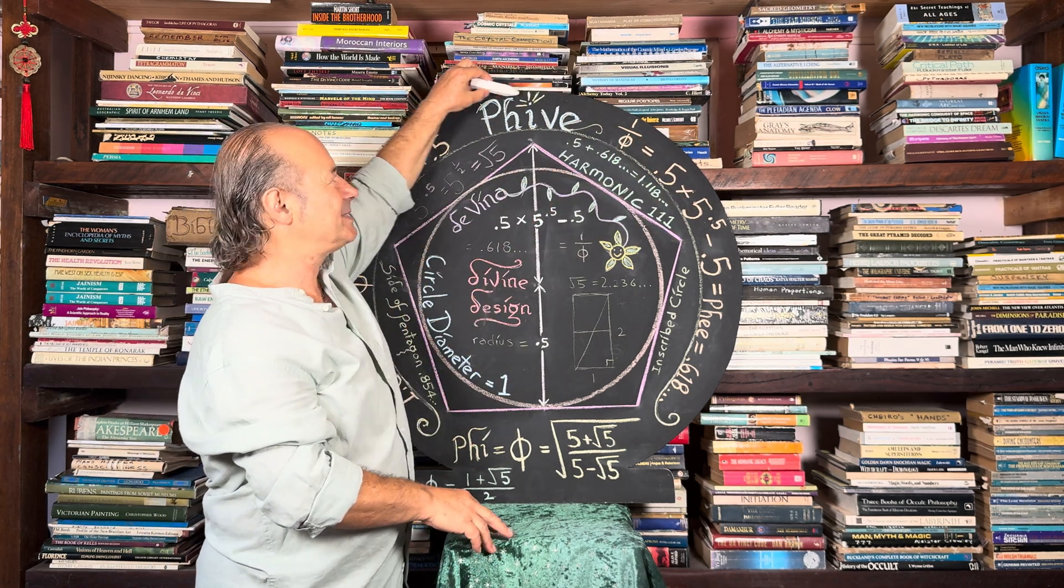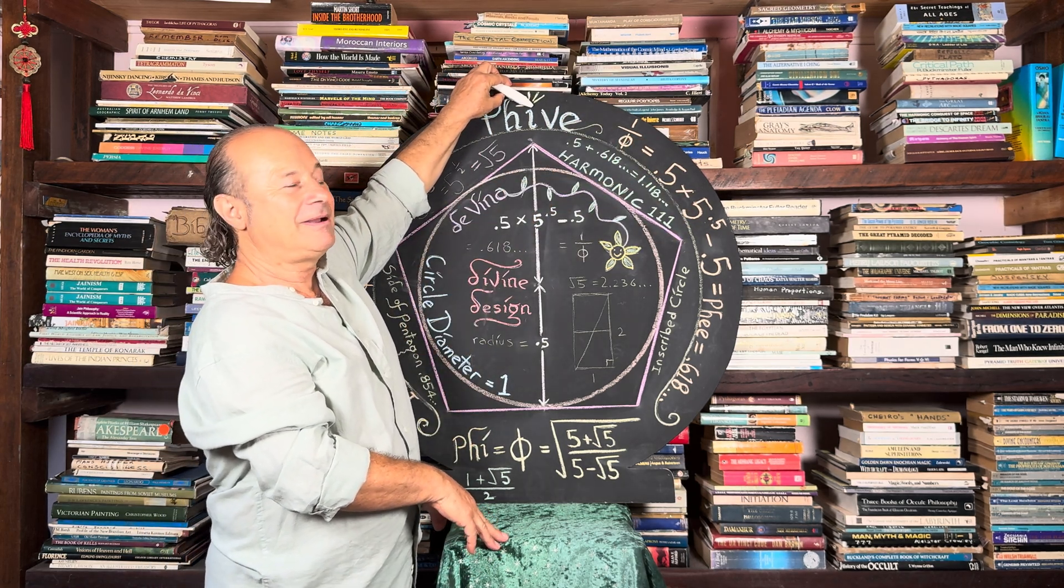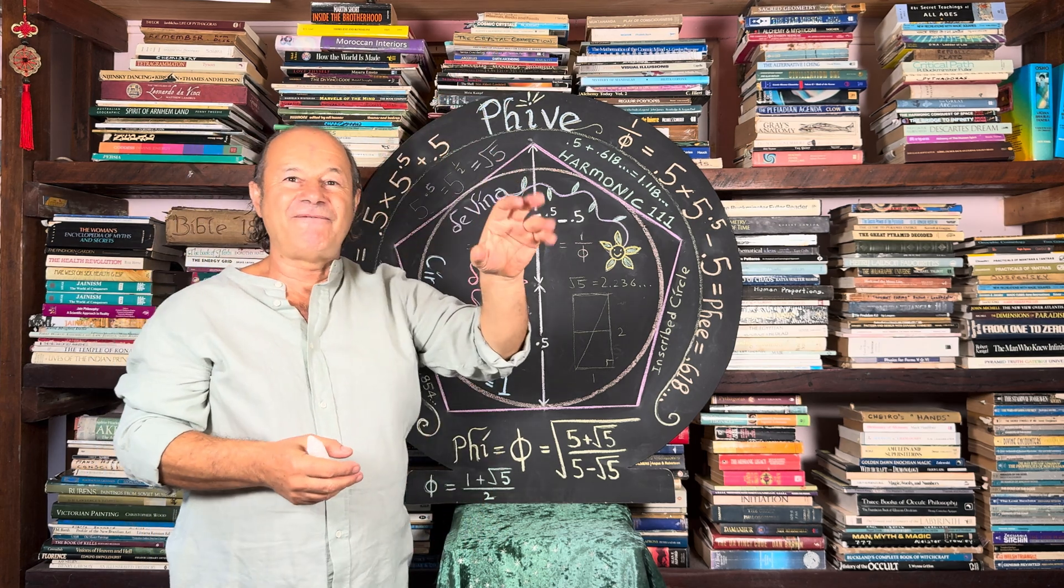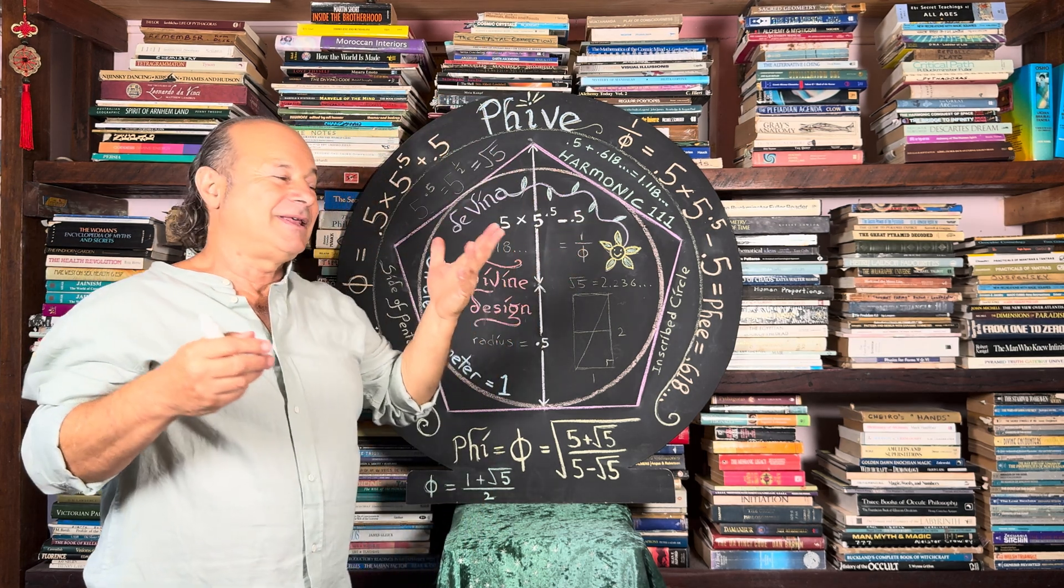Which is why I've called this PHI-ve, playing with the word 5, because we have five fingers, five toes. Five is the key to creation.